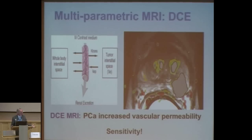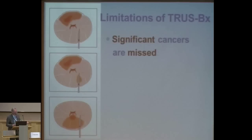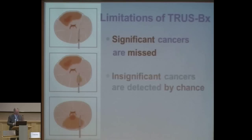If you use the combination of anatomy, diffusion-weighted imaging, and contrast MRI, that may solve a lot of problems. Let's now review the limitations of TRUS biopsy. Significant cancers are missed — anteriorly located. Some insignificant tumors are detected by chance. And finally, the needle doesn't always sample the most aggressive part of the tumor. Significant undergrading.